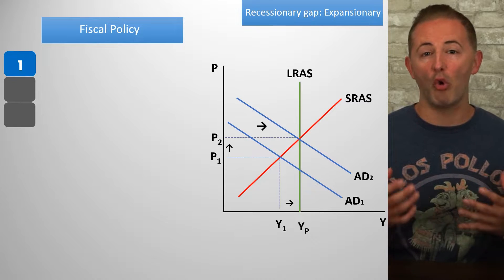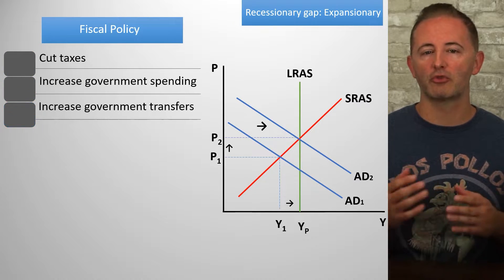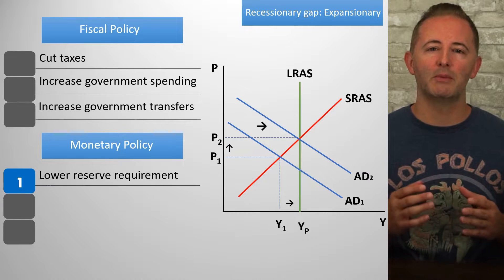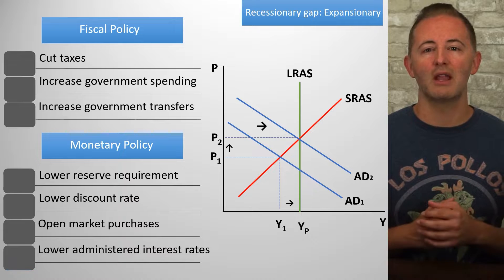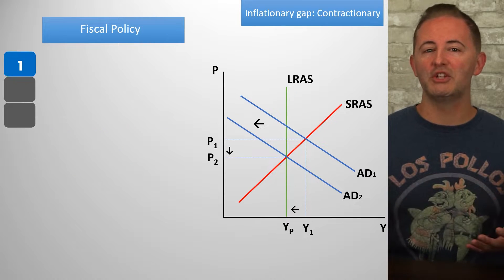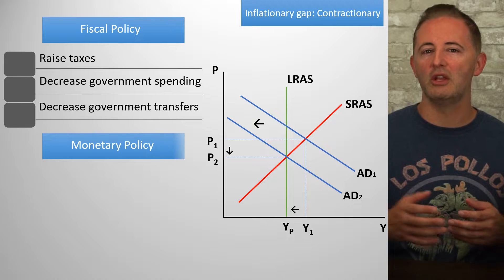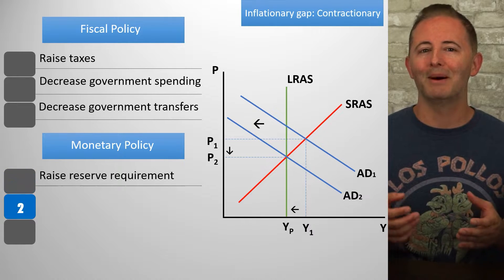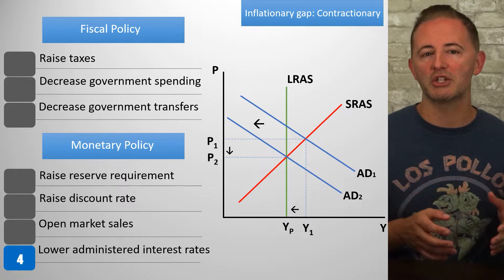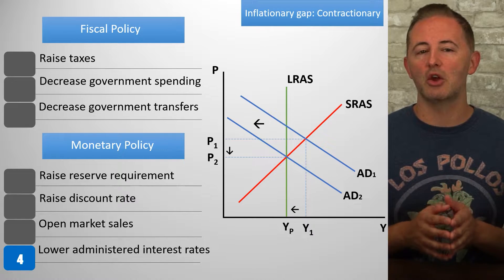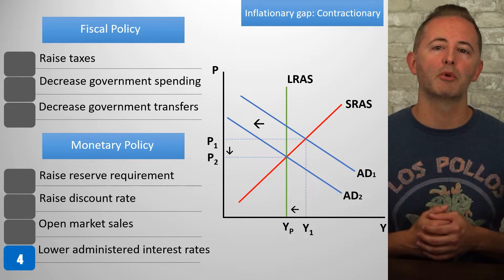Whether fiscal or monetary policy are used, they will both cause the AD curve to shift to the right, bringing the economy back to potential output, and the unemployment rate back to the natural rate of unemployment. If there's an inflationary gap, it's the same story in reverse. The main story is that fiscal or monetary policy should be contractionary, and this will shift the AD curve left, again, bringing the economy back into long-run equilibrium.